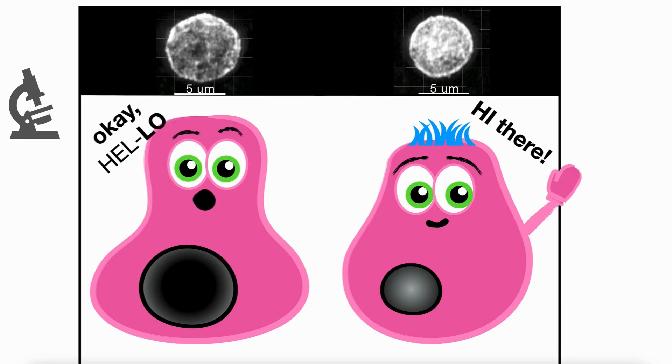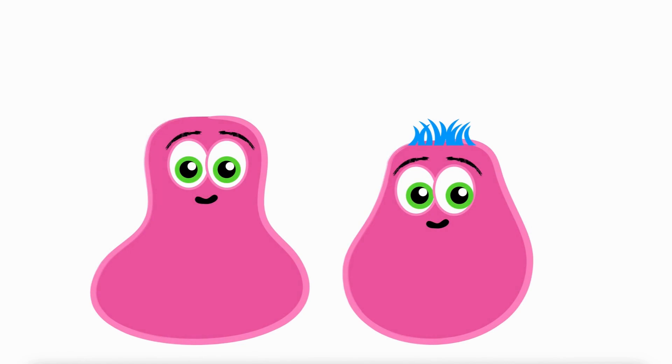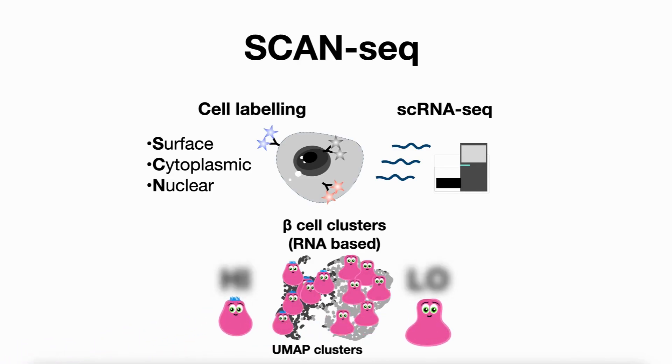To further explore the two types, we developed a technique called ScanSeq. ScanSeq measures protein levels inside and outside the cell, and it also measures the production of thousands of gene products from every single cell. Again, the results pointed to two major groups or types.